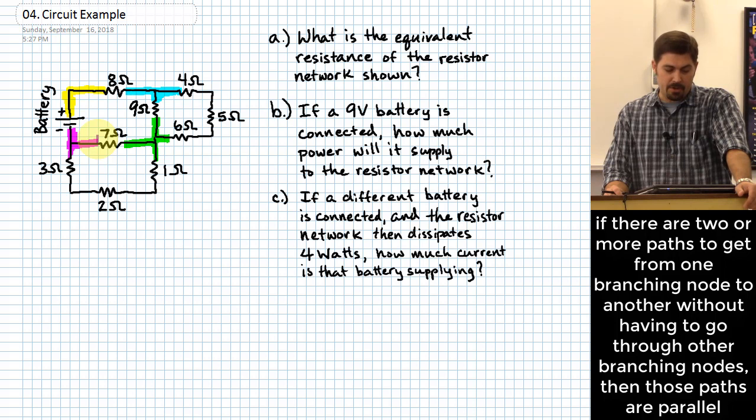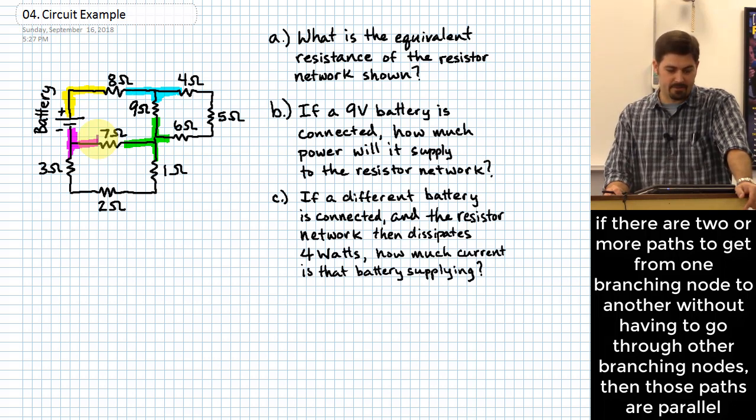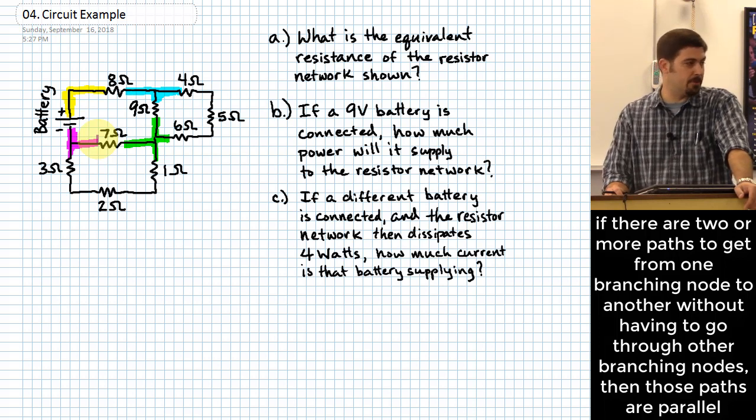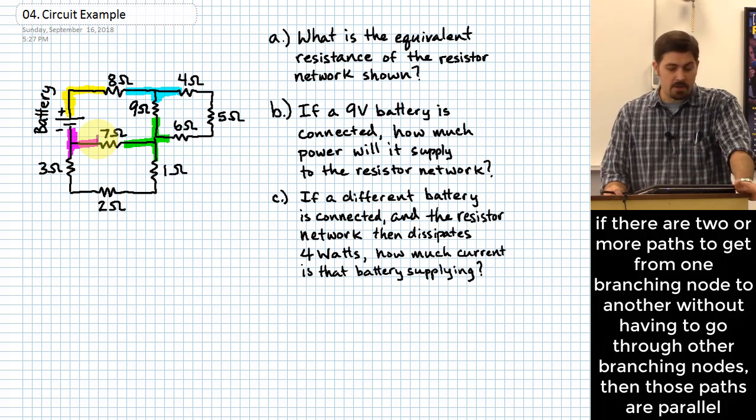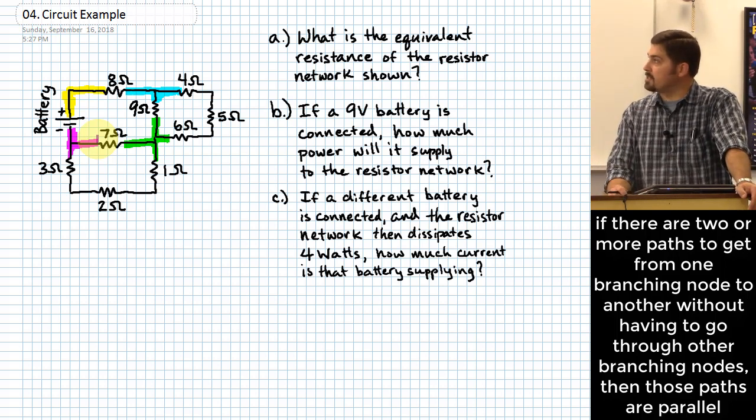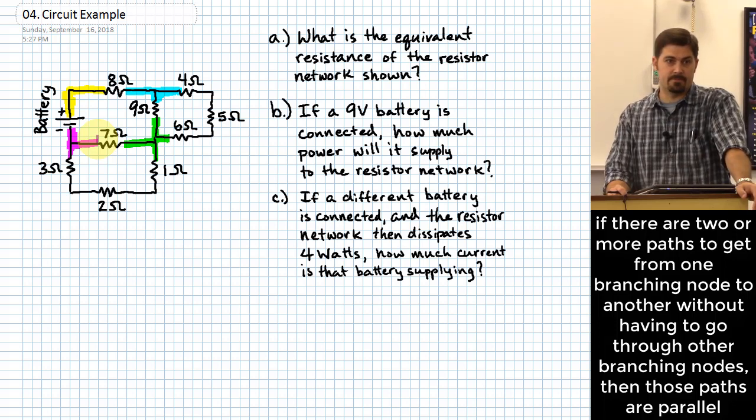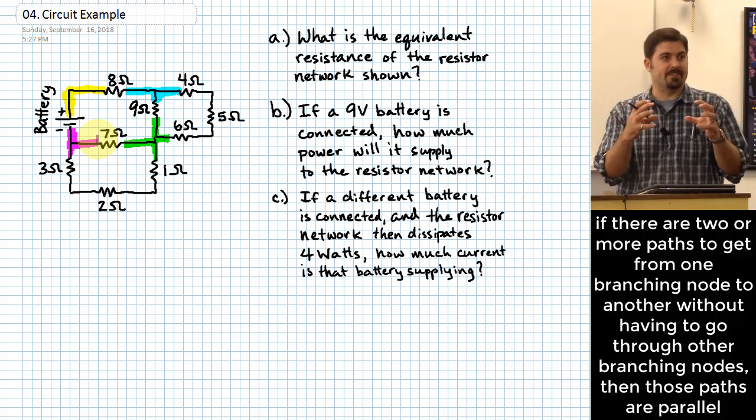Now how about if you're on the green node and you want to go to the purple node? You can go right through the seven ohm resistor, or you can go down through the one, then through the two, then through the three. So what that actually tells us here is that, for instance, the nine ohm resistor is in parallel with the combination of the four, five, and six.